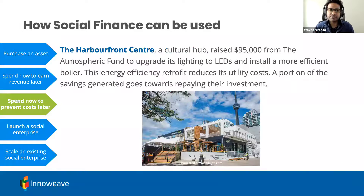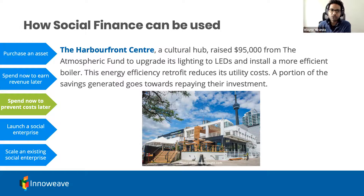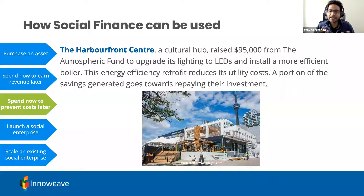Another example of spending now to prevent future costs is retrofits. Harborfront Centre, a cultural hub in Toronto, raised $95,000 from the Atmospheric Fund to upgrade its lighting to LEDs and install a more efficient boiler, reducing utility costs. To generate the savings, it took upfront investment, and a portion of those future savings was redirected to repay the investment. The business case for retrofits is very well established, and the Atmospheric Fund is doing this frequently.